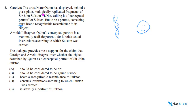And then Arnold says: I disagree. Quinn's conceptual portrait is a maximally realistic portrait — it is a portrait. So as you can see, that's already a disagreement. Arnold thinks it's a portrait because it holds actual instructions according to which Solstyn was created. They just have different definitions of what counts as a portrait. Carolyn thinks you have to have recognizable resemblance, and Arnold doesn't think so.